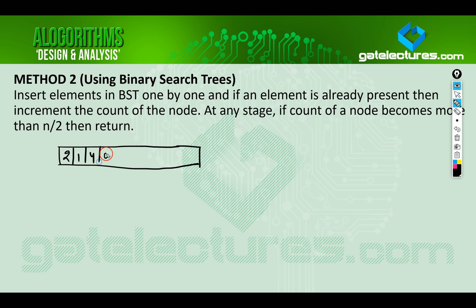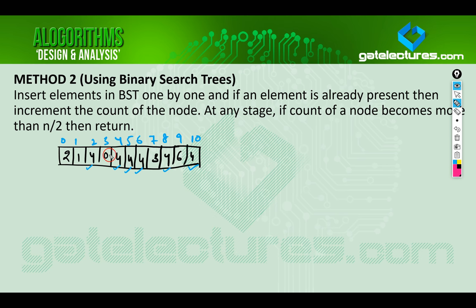We have this array with elements: 2, 1, 4, 0, 4, 4, 4, 3, 4, 6, 4. As you can clearly see, 4 is in majority. The index locations are 0 through 10, and 4 appears six times — so 4 is in majority. For this case we are going to use the binary search tree, and let me add one more 4 to make it clearer.